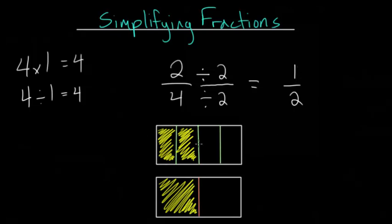You can see very clearly that they are the same. The portion of the rectangle shaded yellow is the same in both of these. That's because 2 fourths and 1 half are equivalent to each other.